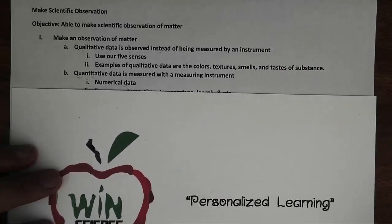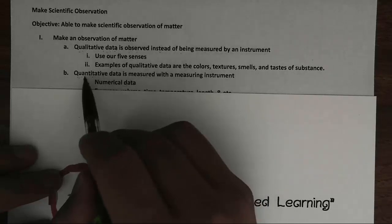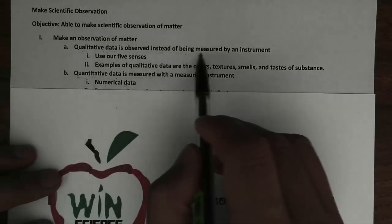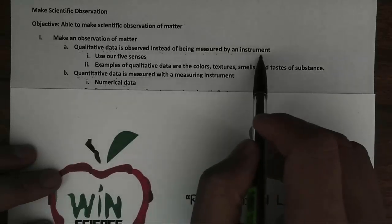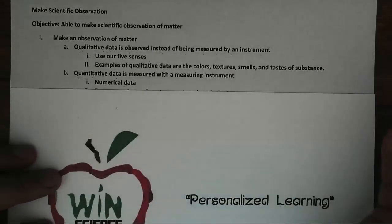When we make an observation of matter, we either collect qualitative data or quantitative data. Qualitative data is observed instead of being measured by an instrument.